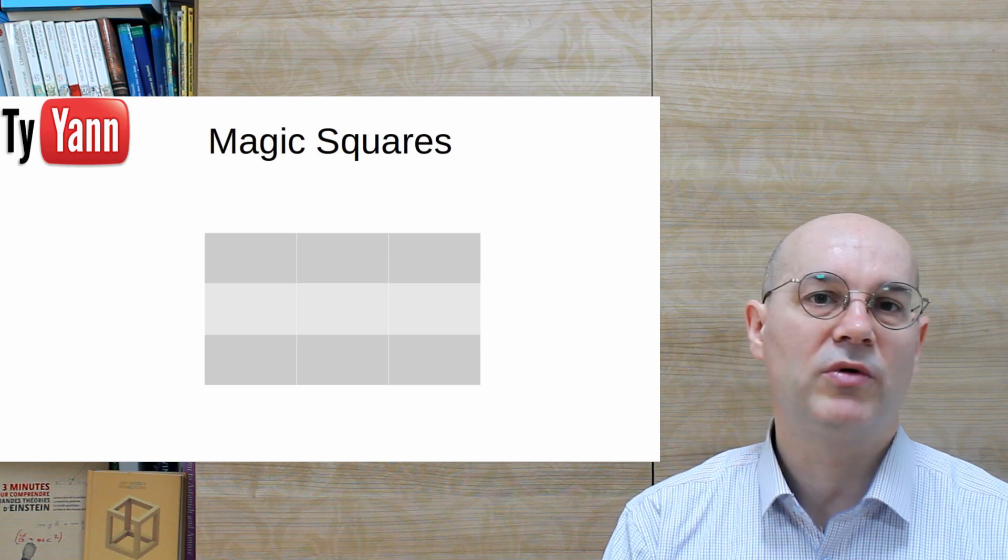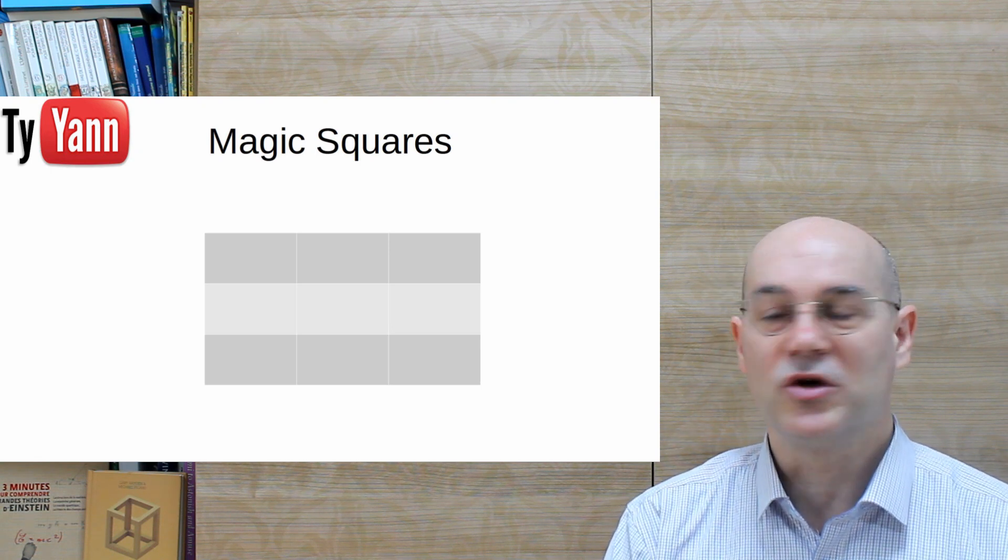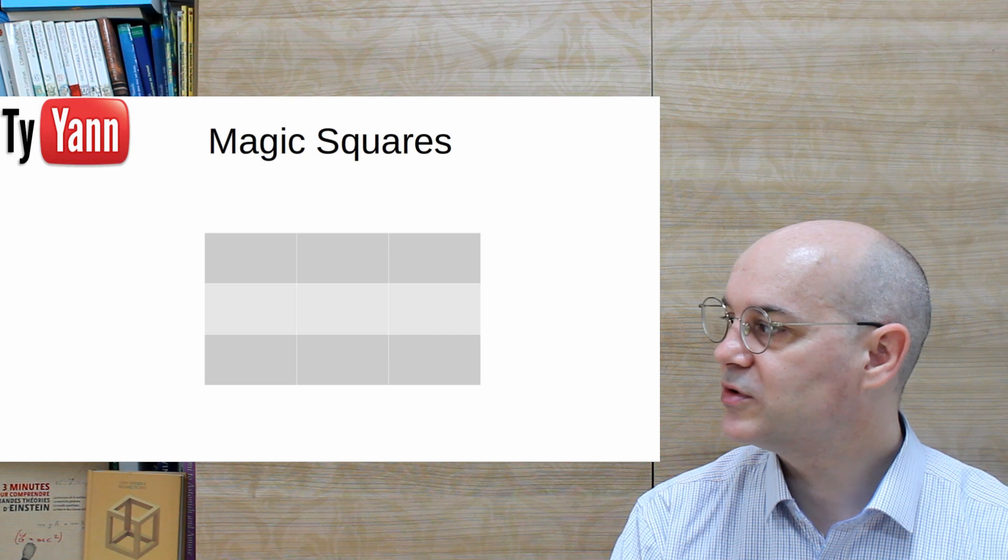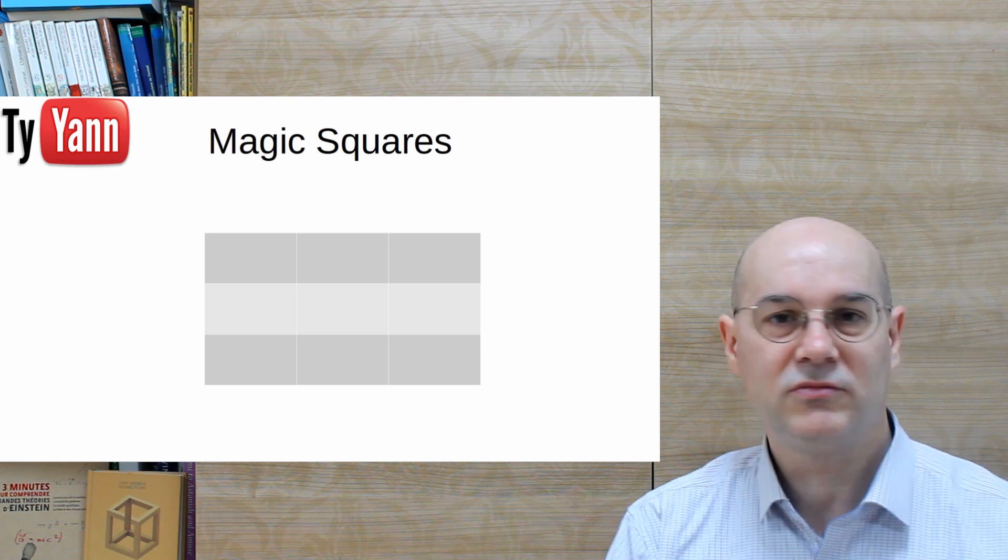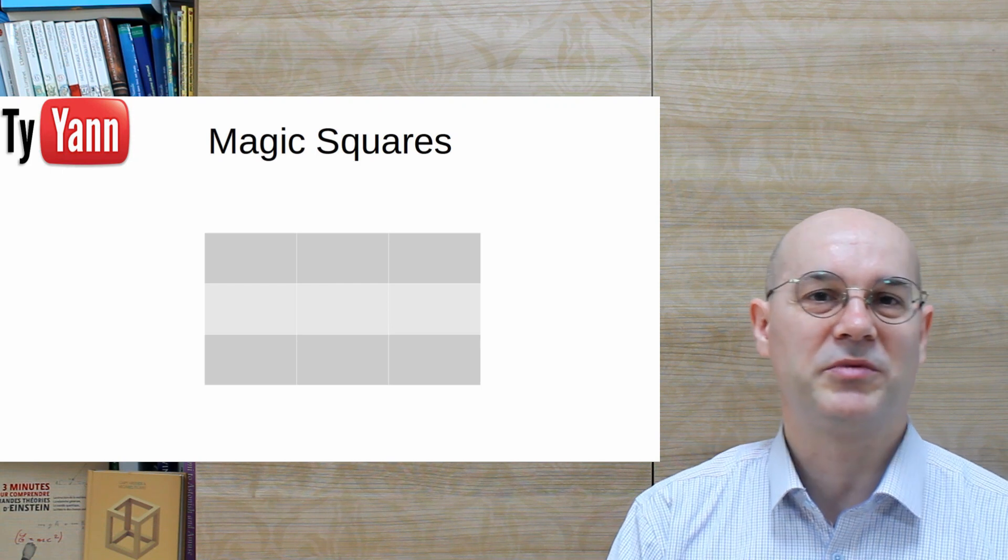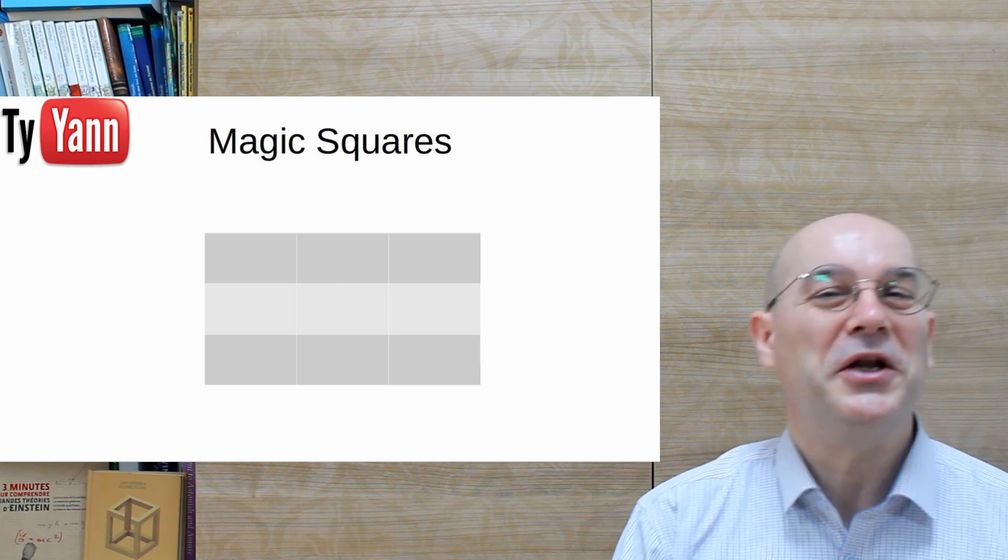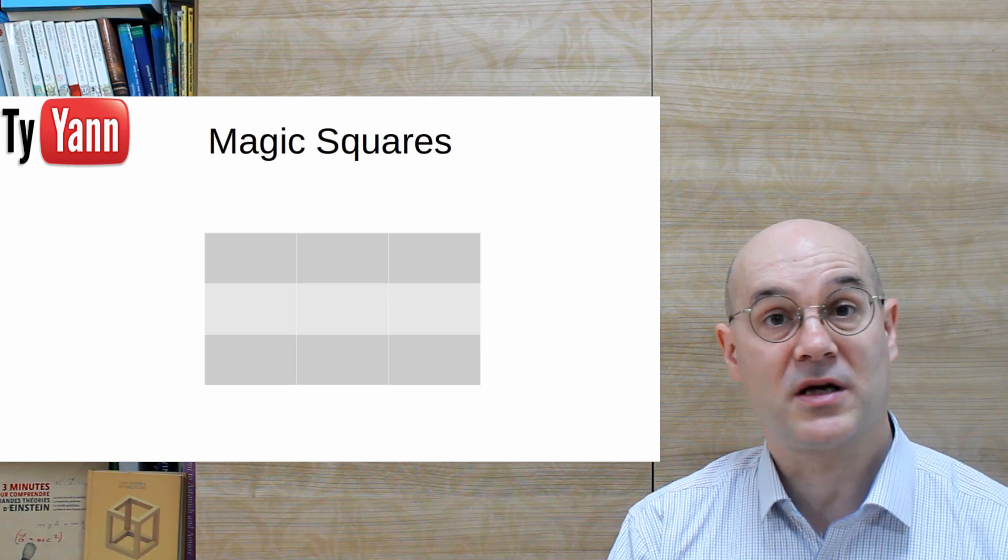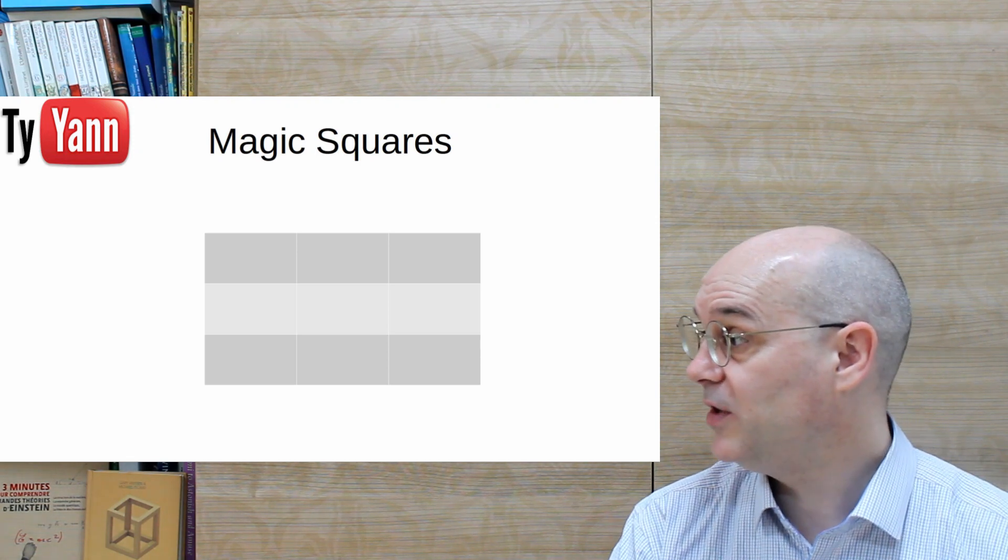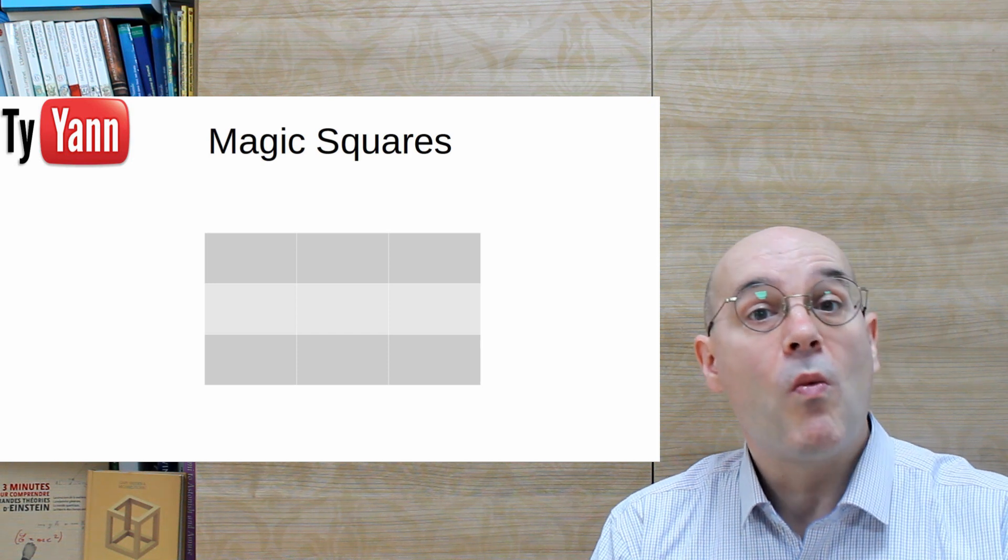But usually, we want to put numbers from 1 to 9. So we're going to study these numbers from 1 to 9 and also others which are a little bit special and deserve to be studied. So we're gonna start with this 3 by 3 and as an exercise you can start to try to fill up this with numbers from 1 to 9.